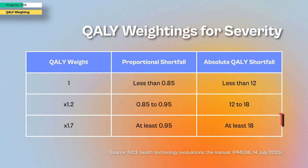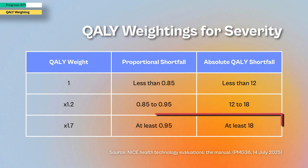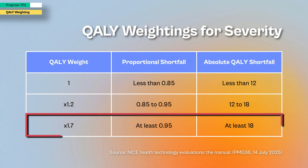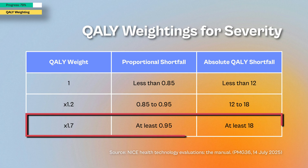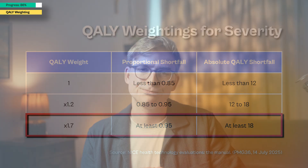And if the proportional shortfall is 0.95 or higher, or the absolute shortfall is at least 18 QALYs, the QALYs are multiplied by 1.7. NICE will always apply whichever of the two measures gives the higher weight.